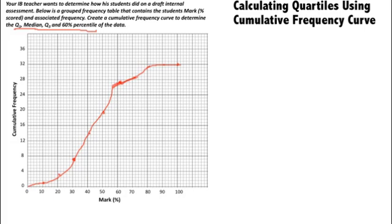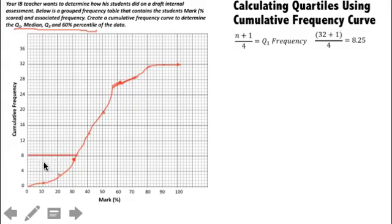So the first thing we need to calculate is Q1. And the way that we're going to do that is we're going to do n plus 1 divided by 4. And that's going to get our Q1 frequency, which is going to tell you our y-axis. And we're going to use that value to figure out our x-axis, which is our mark percentage. Now we know n is total cumulative frequency, and that's 32 plus 1 divided by 4 gets you 8.25. So that's the cumulative frequency associated with Q1. I drew this line right here because that shows that 8.25, if I draw a line to the curve, it hits the curve right here. Now what's the associated mark there? Well, the associated mark there is about a 33%. So our Q1 is about 33%.